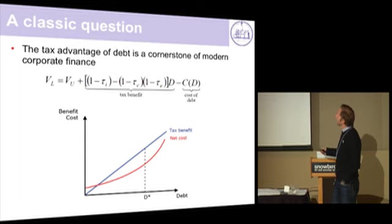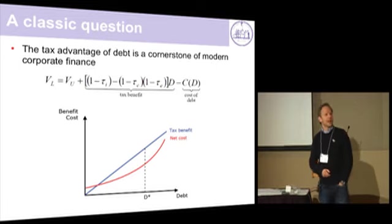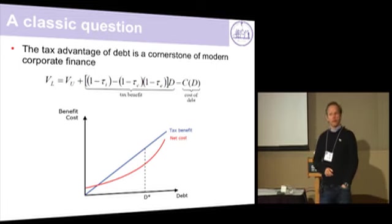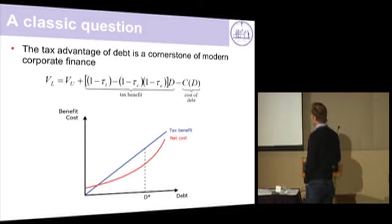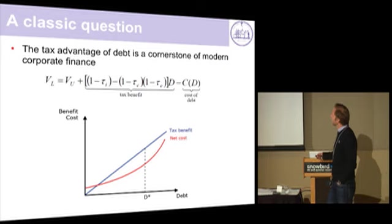So if you were to change — let's say increase the tax on interest payments, because they're tax deductible — this line would pivot out, and would mean that the firm, if it chooses its debt optimally, would be at a higher level of debt.